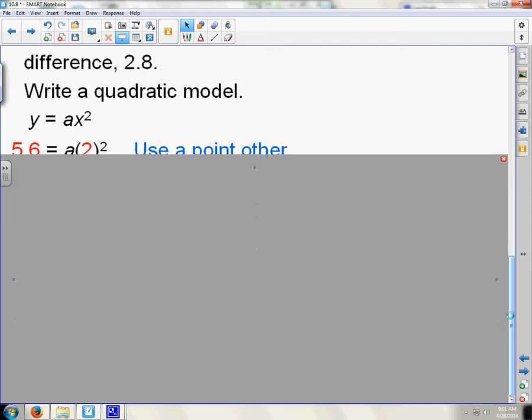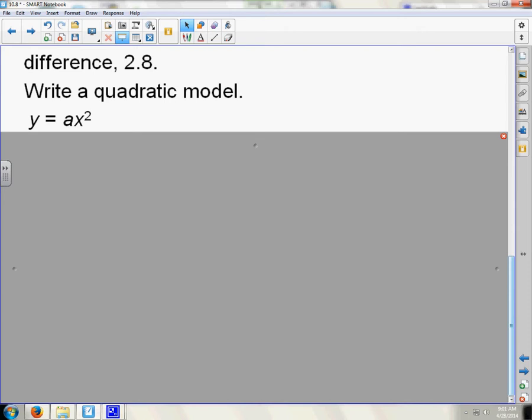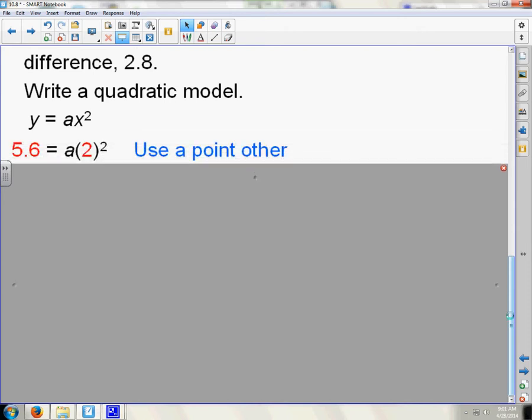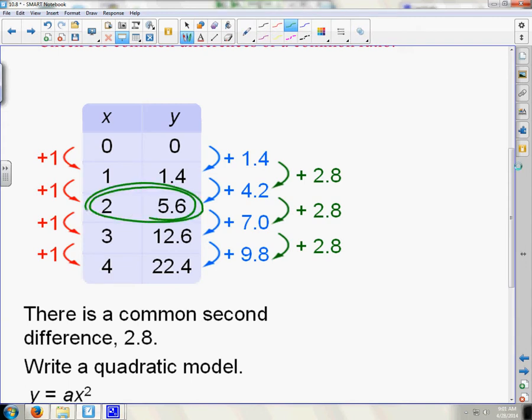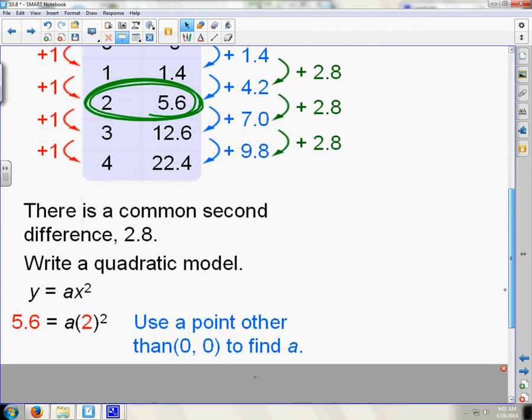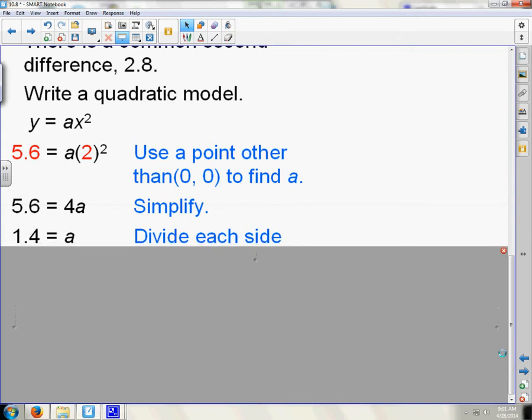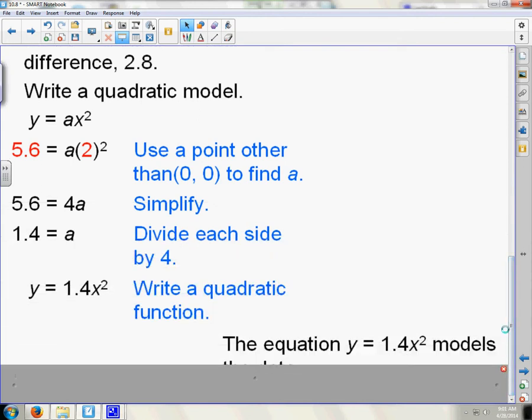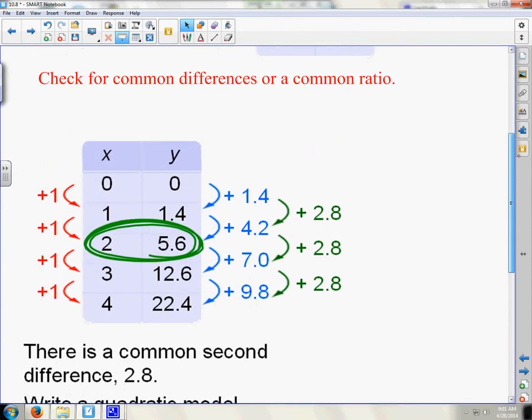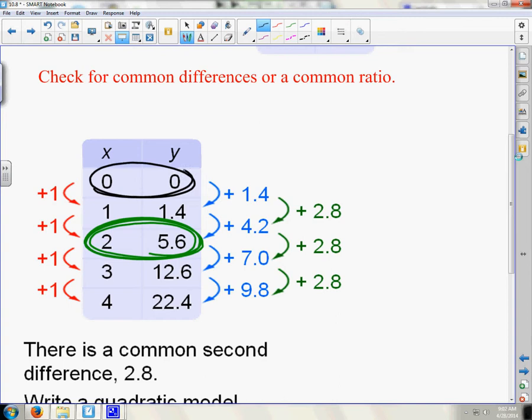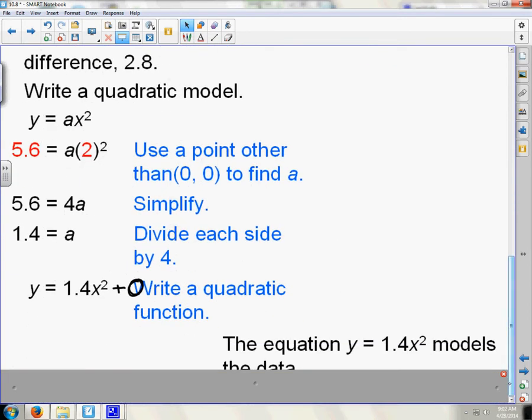Now, here's how you write the equation. You know that it's y equals ax squared. We know that it has to have an x squared for a quadratic. So, everybody knows that. Now, where do they get 5.6 and 2? Well, it just says use a point other than 0,0. So, they just picked any random point on this table. And they picked 2 and 5.6. Now they put 2 in for x and 5.6 in for y. And you solve that equation. And then you can see that your equation is y equals 1.4x squared.